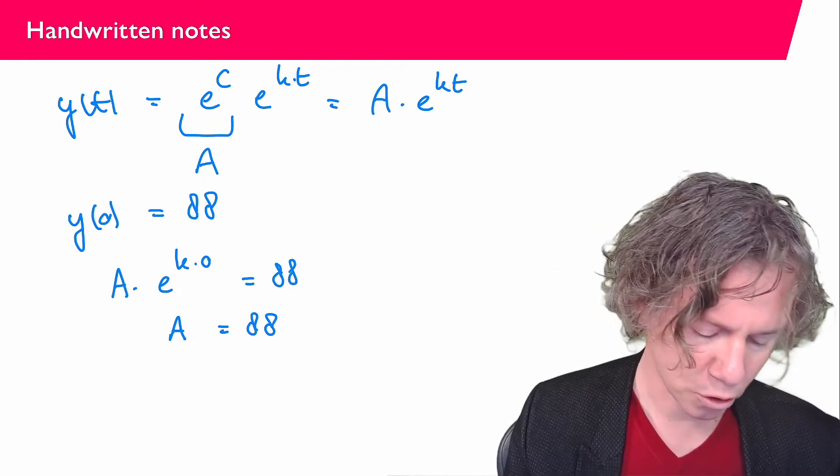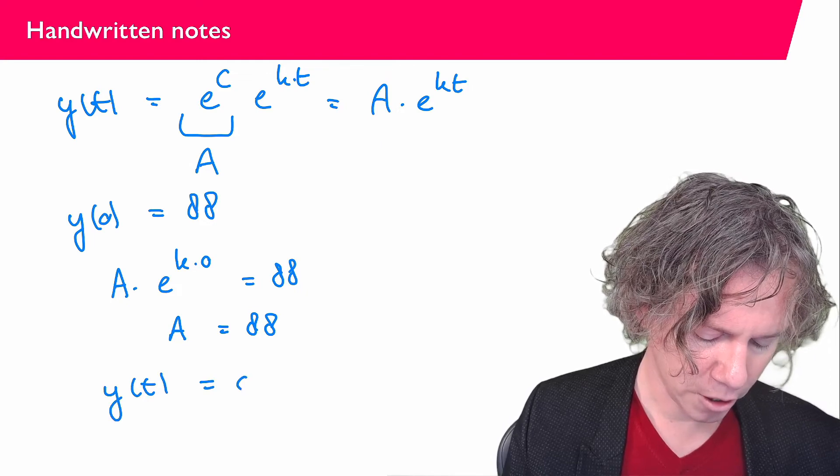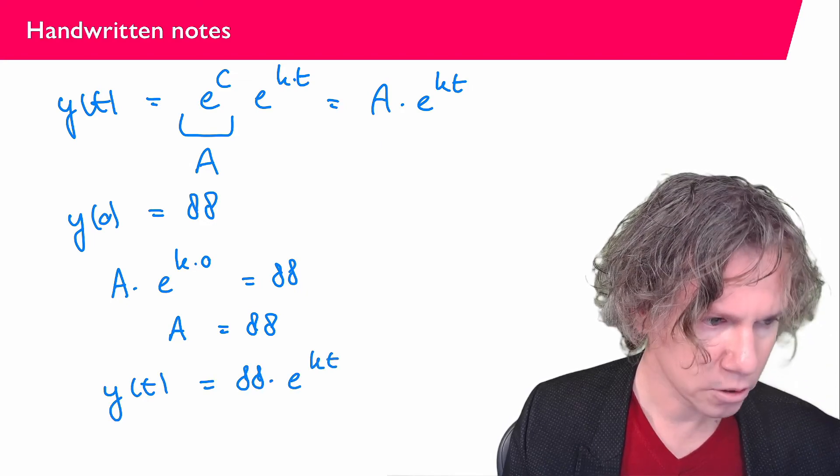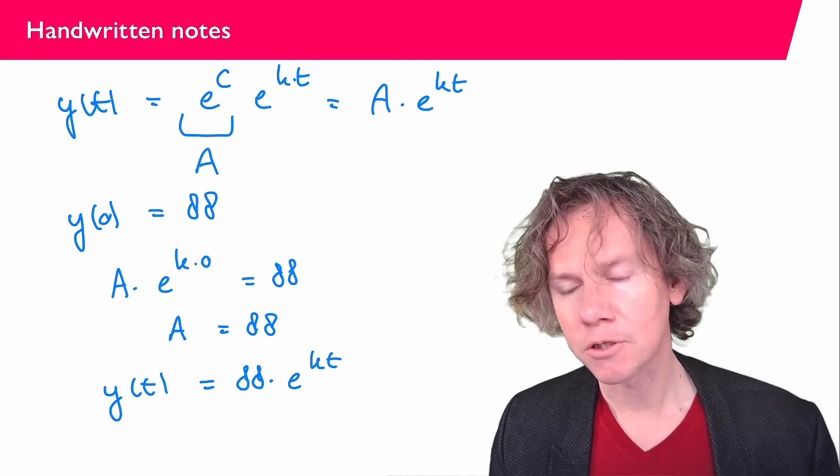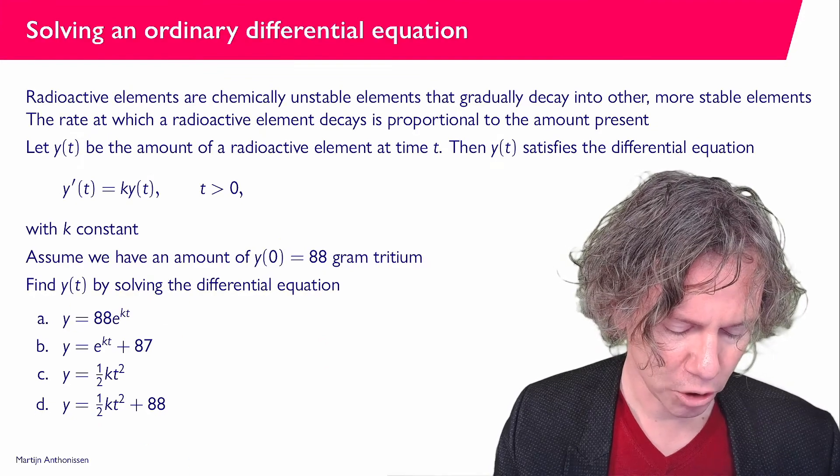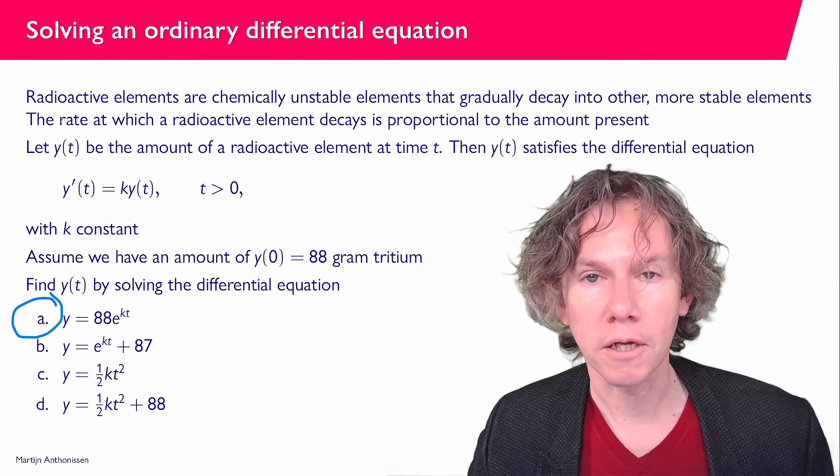And the final solution to this question is y(t) = 88·e^(kt). That is the answer to this question, and if we scroll back to the original question, we see that apparently answer (a) is the correct answer here.